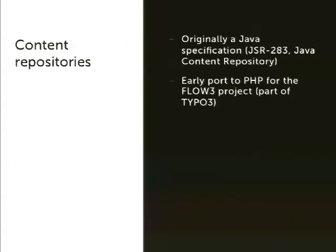The other source of inspiration is what the Java world calls content repositories — originally a Java specification, JSR 283. There is currently a port to PHP initiated by the Flow3 project as part of the refactoring of TYPO3. It's a very interesting project, but also very complex — way more complex than what we actually need. It has no specific focus on performance, which is a big concern, because making that scale will be an even bigger challenge. The discussions need to continue, but it's a very interesting piece of inspiration.